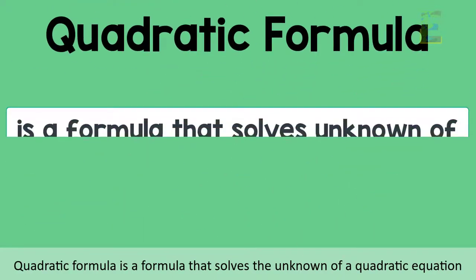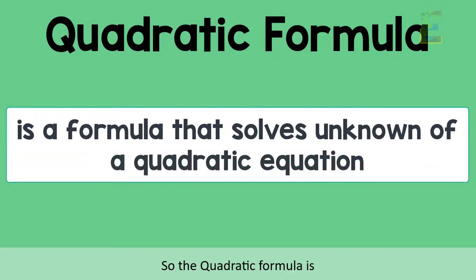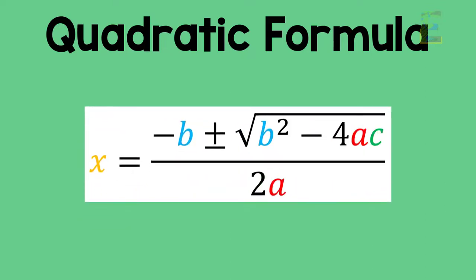The quadratic formula is a formula that solves the unknown of a quadratic equation. The quadratic formula is x equals negative b plus or minus square root of b squared minus 4ac, all over 2a.